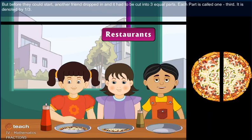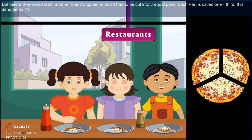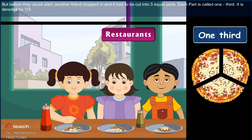But before they could start, another friend dropped in and it had to be cut into three equal parts. Each part is called one third. It is denoted by one by three.